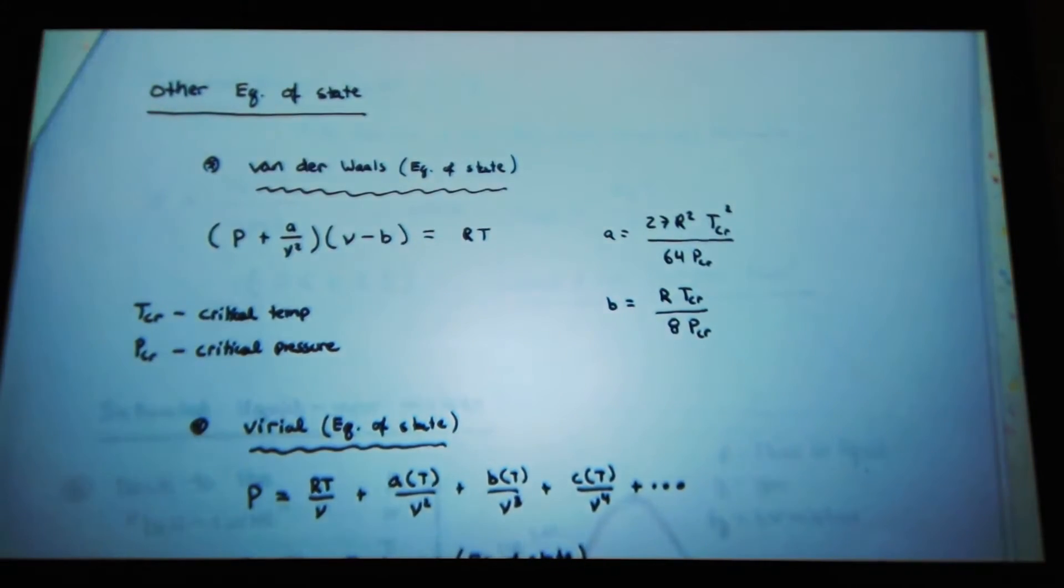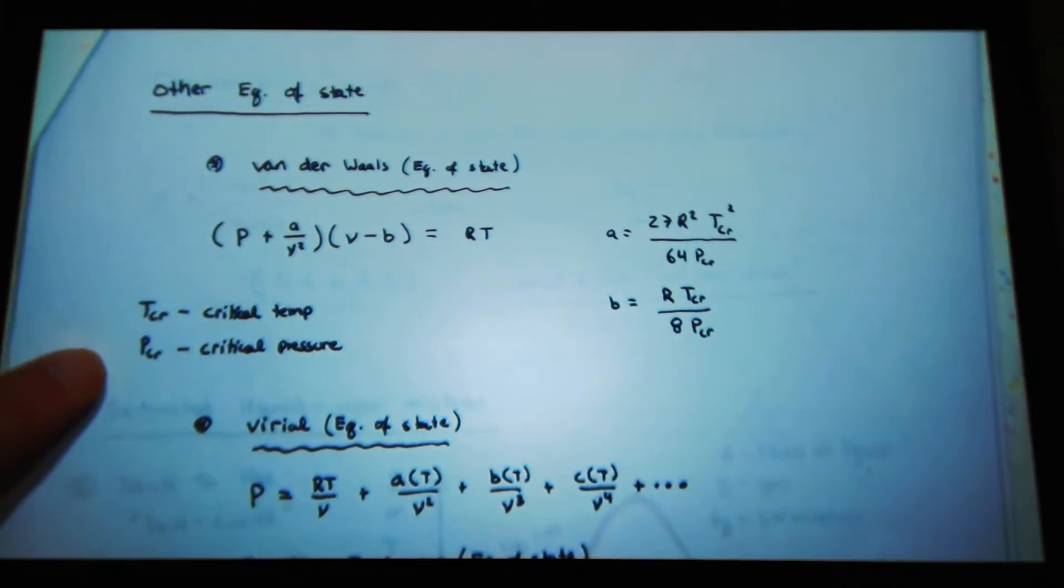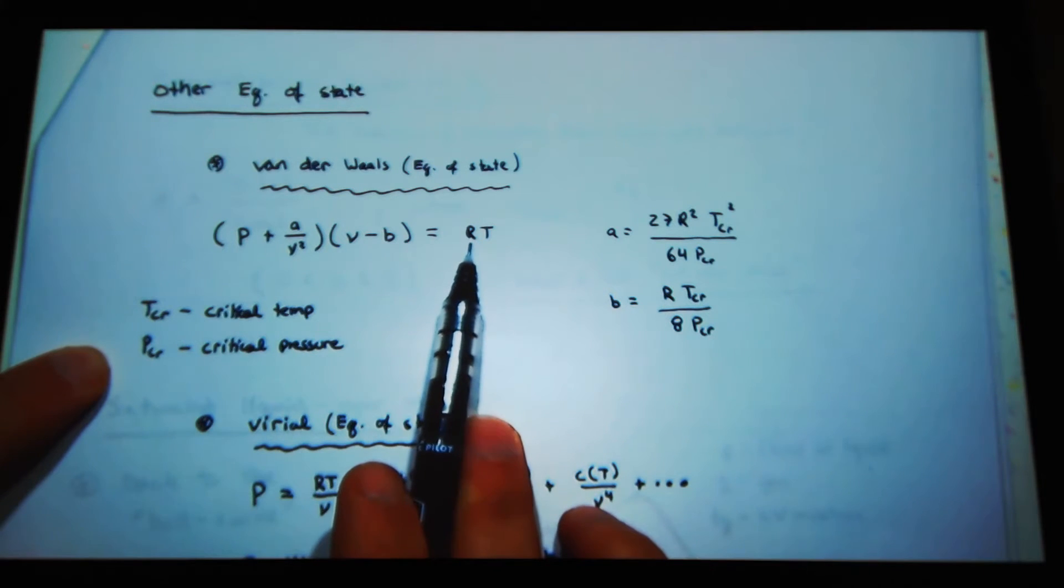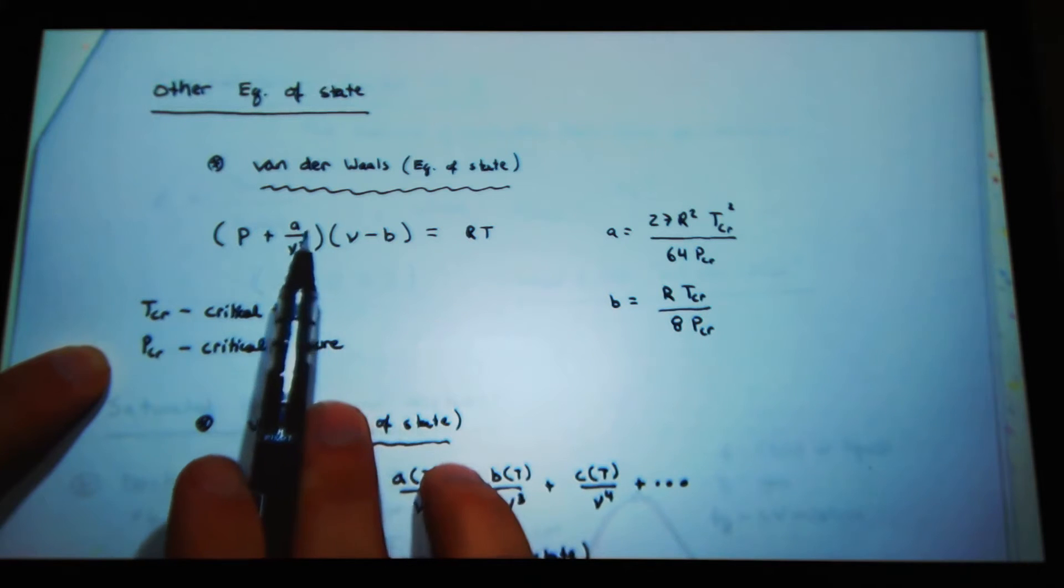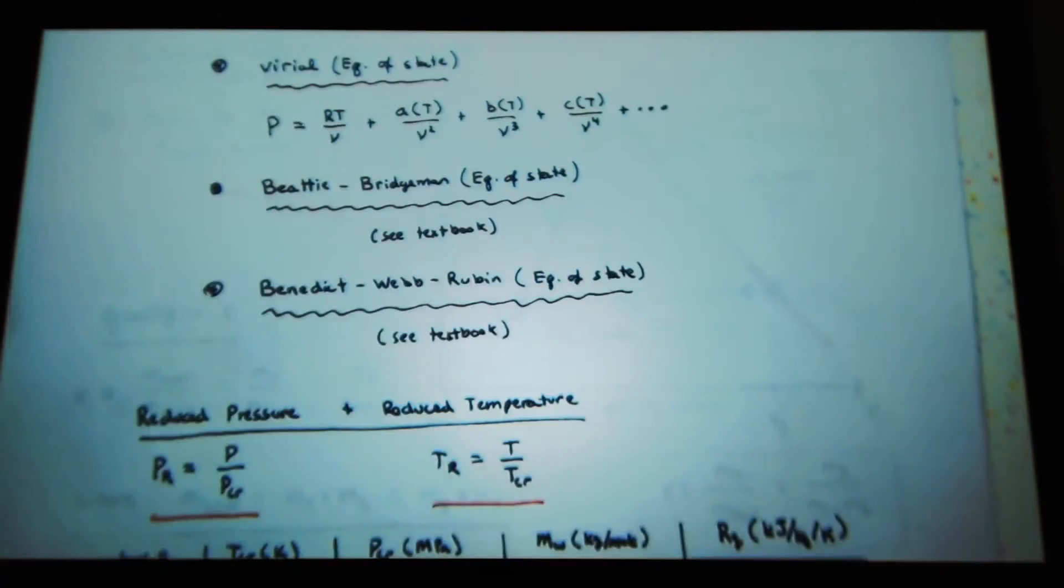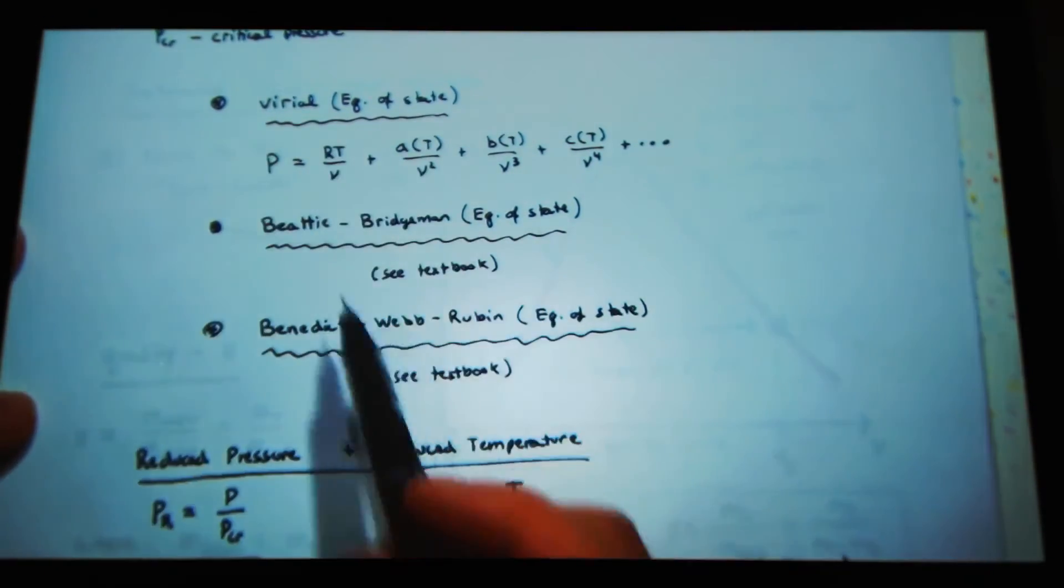There's other equations of state. Another well-known equation of state is the Van der Waals equation of state. I still have P over here, I still have V over here, I still have some constant R, and then I have T, but now I have these other parameters A and B, and then I can relate those to critical pressures and temperatures.